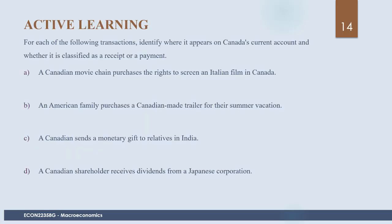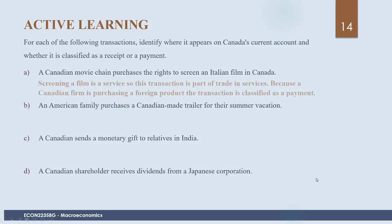Active learning question: For each transaction, identify where it appears on Canada's current account and whether it is a receipt or payment. In part A, a Canadian movie chain purchases the rights to screen an Italian film in Canada. Screening a film is a service, so it goes into the current account under trade in services. Because a Canadian firm is purchasing a foreign product, the transaction is classified as a payment — an outflow.